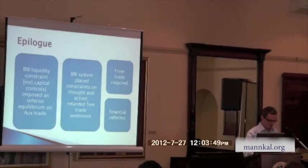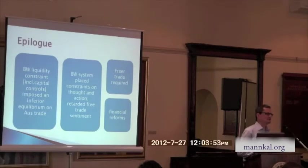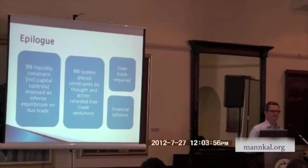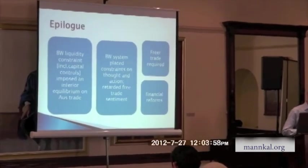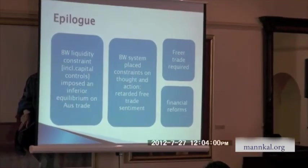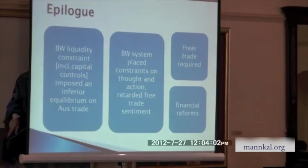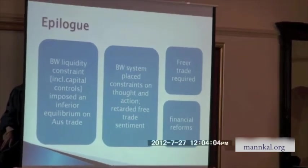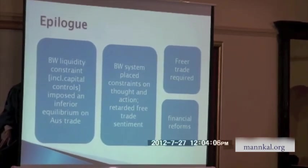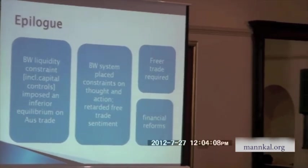In conclusion, looking at the New Zealand and Australian cases and the policy deliberations in the archival material, the Bretton Woods system — including its capital controls restricting private capital movements — imposed a kind of inferior equilibrium on world trade, and in particular on Australian trade. The system also placed constraints on thought and action during this period. It retarded free trade sentiment.